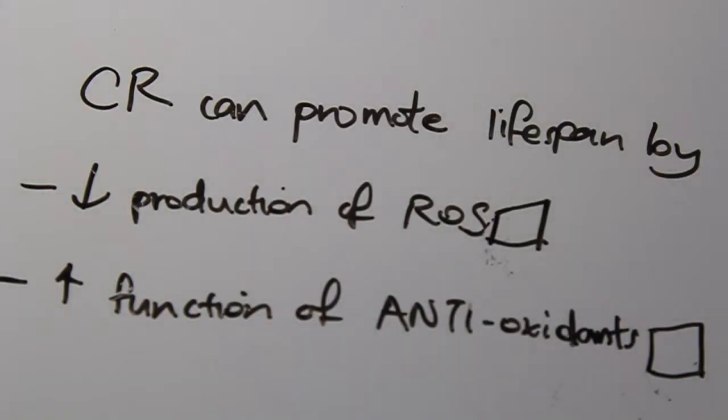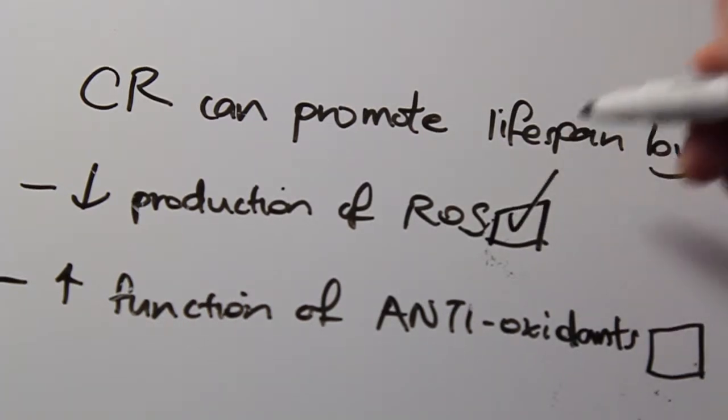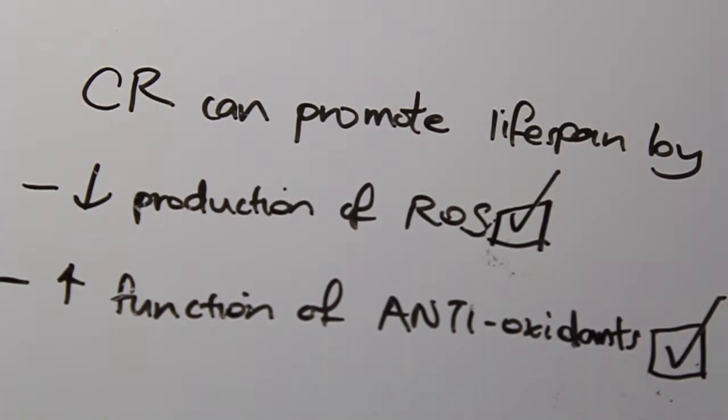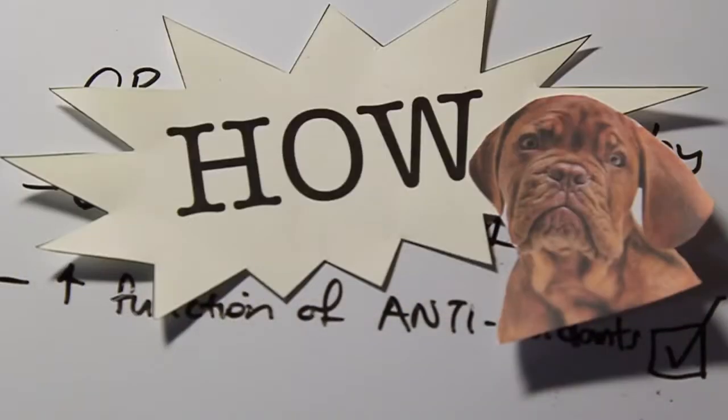It has been proposed that calorie restriction can promote lifespan by reducing the production of ROS and promoting the function of antioxidants that can repair oxidative damage. But how?